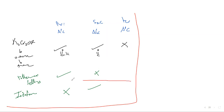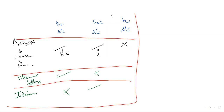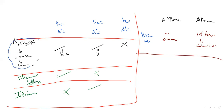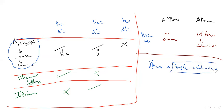To differentiate between alkanes and alkenes: using bromine solution, alkanes show no color change, while for alkenes the color changes from red-brown to colorless. Potassium dichromate changes from orange to green, and potassium permanganate changes from purple to colorless. Bromine solution changes from red-brown to colorless in the presence of alkenes.